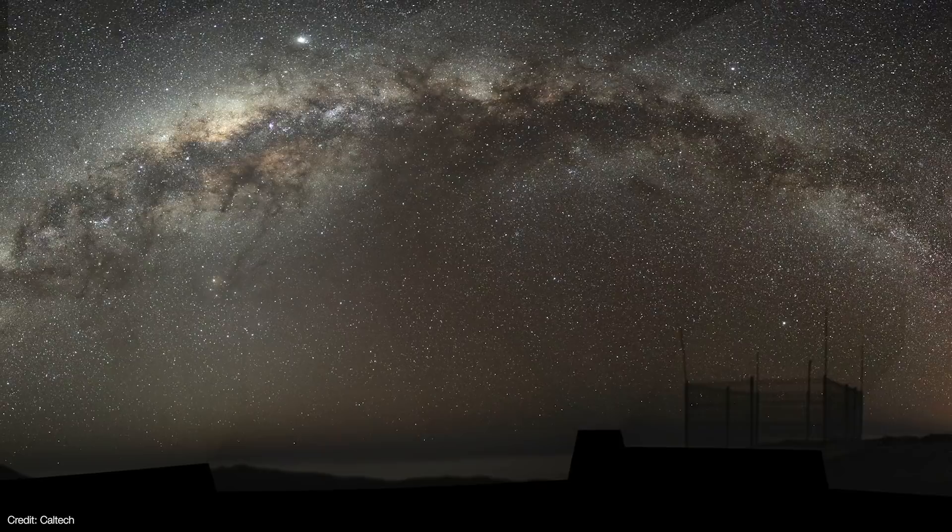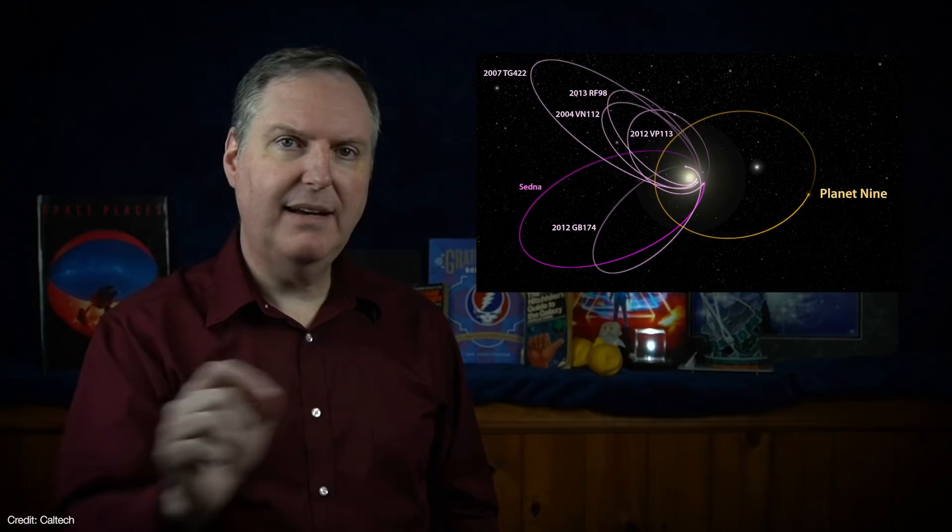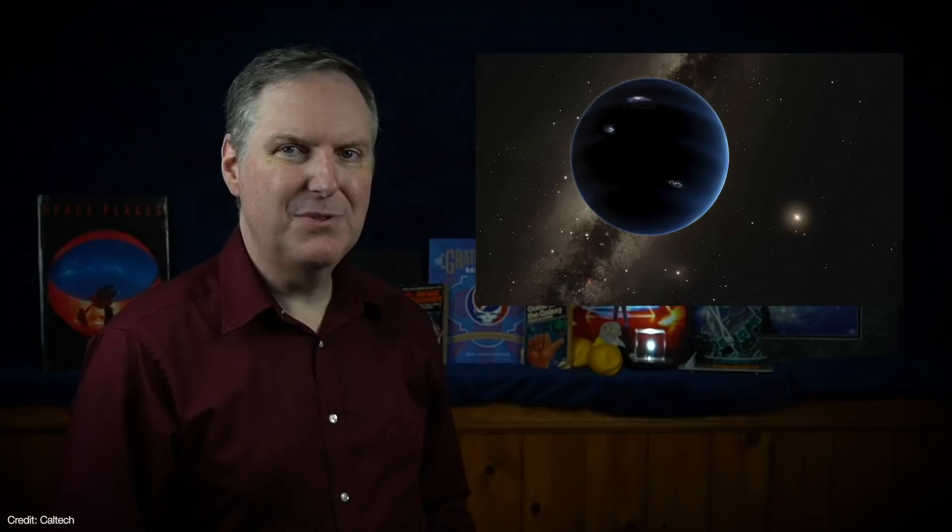So astronomers use models to predict Planet 9's expected orbit and therefore determine where in the sky to search. While the idea of a mini Neptune lurking in the distant outer reaches of the solar system has captured everyone's imagination, it's also been met with a healthy dose of skepticism.